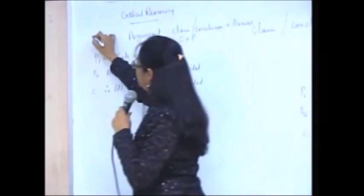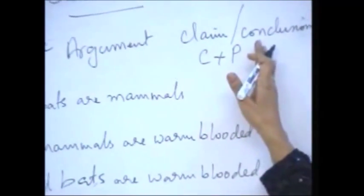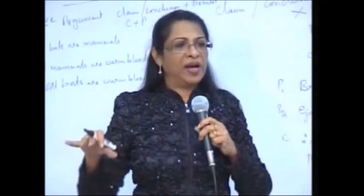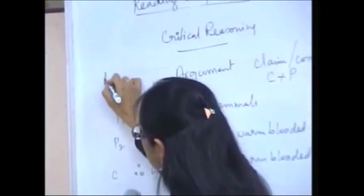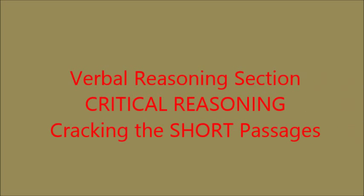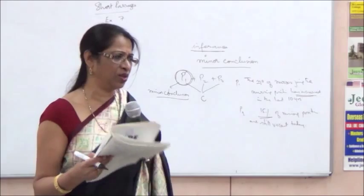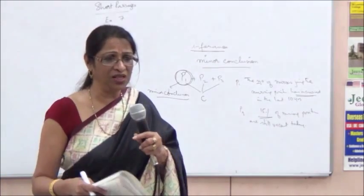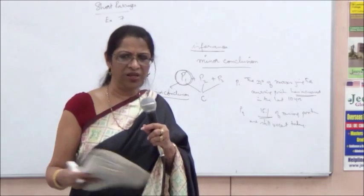These are called deductive arguments. Deductive arguments have only two components: the claim or conclusion plus the premises (C + P). The arguments that come on critical reasoning, on GRE analytical writing, as well as in short passages are not so simple. The arguments you get on GRE are mostly what we call inductive. For example, if the Kavonga lions raised in captivity were not taught by their parents to indulge in aggressive play, when released in the wild they are not able to hunt — proving conclusively that because they did not get that training in childhood, they cannot hunt.